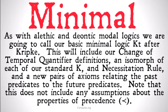This will include our change of temporal quantifier definitions, an isomorph of each of our standard K and the necessitation rule, and a new pair of axioms relating the past predicates to the future predicates and vice versa. Note that this does not include any assumptions about the properties of precedence. This minimal temporal logic does not make any assumptions about precedence.